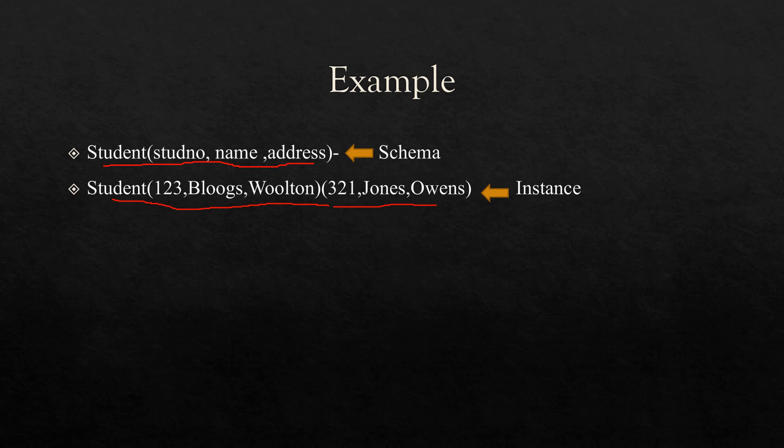The instance will change. When we add 98 more records to this table, the number of instances of the database at that time becomes 100. In short, at a particular moment the data stored in the database is called the instance, and it changes over time when we add or delete data from the database.